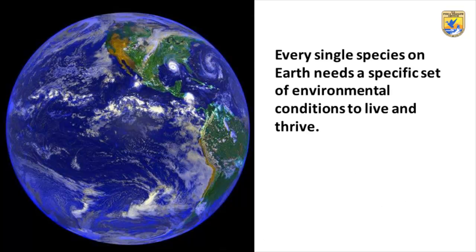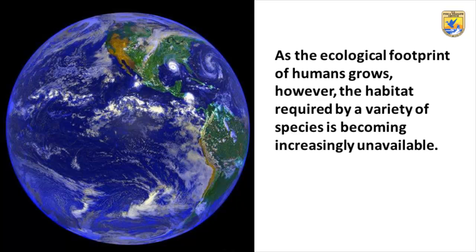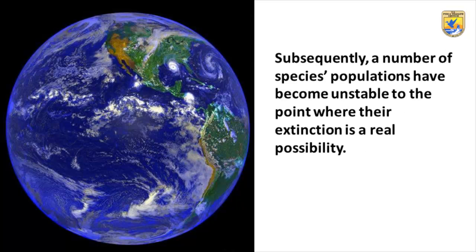Every single species on Earth needs a specific set of environmental conditions to live and thrive. As the ecological footprint of humans grows, however, the habitat required by a variety of species is becoming increasingly unavailable. Subsequently, a number of species populations have become unstable to the point where their extinction is a real possibility.